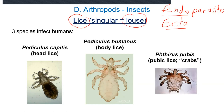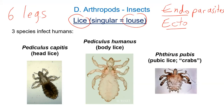You can see they are Pediculus humanus capitis, Pediculus humanus — that means head and body. And then we have the pubic lice, which some people might call crabs. The first two — head lice and body lice — are actually pretty closely related species, whereas pubic lice is a little different.